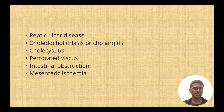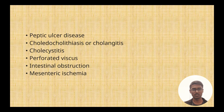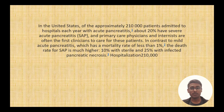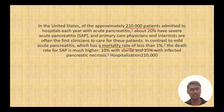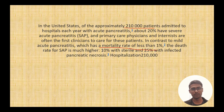The differential diagnosis includes peptic ulcer disease, cholelithiasis, cholangitis, cholecystitis, perforated viscus, and intestinal obstruction with mesenteric ischemia. In terms of epidemiology, about 210,000 patients per year in the U.S. are affected. Mortality is less than one percent if treated with fluids. However, in severe acute pancreatitis, mortality can be around 10 percent of sterile necrosis and 25 percent for infected pancreatitis.